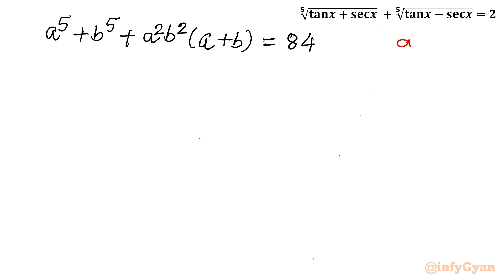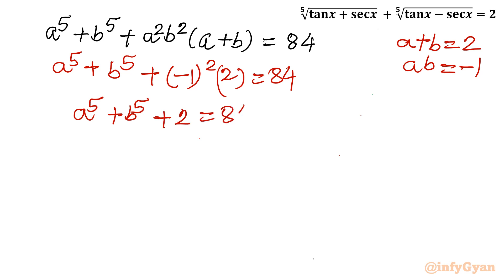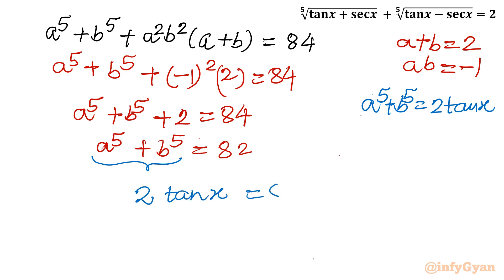Substituting A+B = 2 and AB = −1: A⁵ + B⁵ + (−1)²(2) = 84, which gives A⁵ + B⁵ + 2 = 84. Therefore A⁵ + B⁵ = 82. Now equating this with 2 tan x: 2 tan x = 82, so tan x = 41.